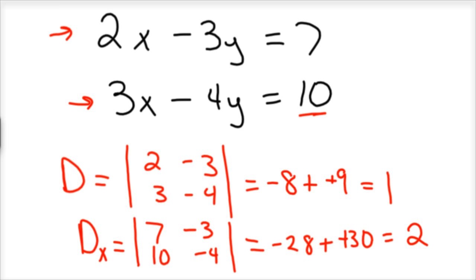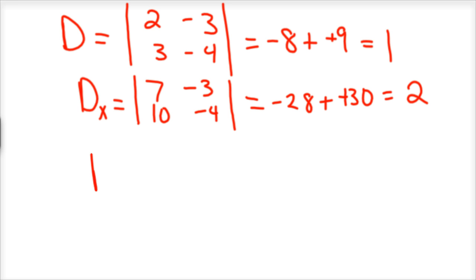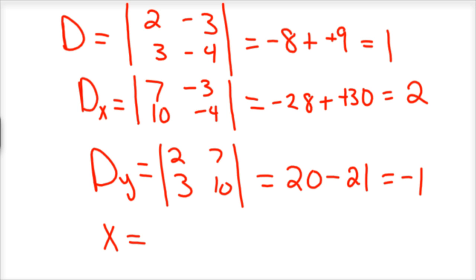Very good. Then you do the same for y. You take that 7, 10 and plug it in for the y portion. So Dy is equal to 2, 3, that stays the same, but 7, 10 now goes in place of the y component. And so you do the determinant. That would be 20 minus 21, which is -1.